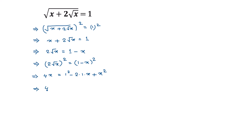So 4x is equal to 1 minus 2 times x plus x squared. Taking the right side to the left, we can write 4x minus 1 minus negative 2x, which becomes positive 2x, and this positive x squared becomes negative x squared, all equal to 0.